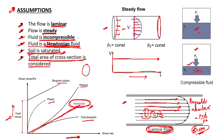And the flow is mostly laminar. The fluid is incompressible — yes, water is almost incompressible. And the fluid is Newtonian — yes, water is Newtonian. So we can easily apply this assumption. The soil is saturated — it might be or it might not be. And the total area of cross-section is considered — these might be same or different, but it will not affect the answer very much.